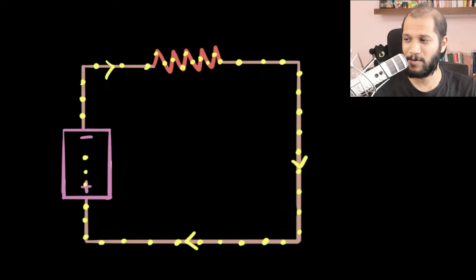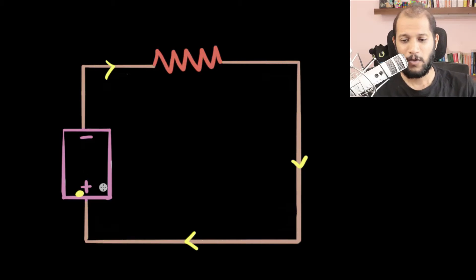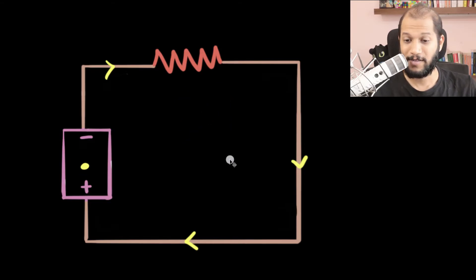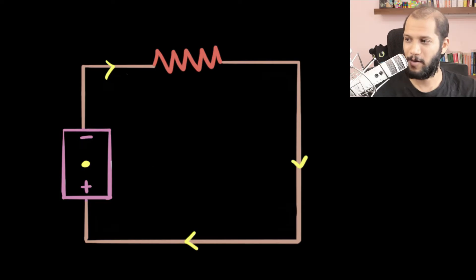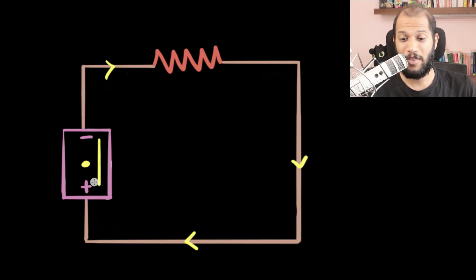To do that, I'm just going to ignore all the other electrons and concentrate on just one. If you look at an electron inside a battery, you can see that it's being pushed by the negative terminal and pulled by the positive terminal, which means the electron experiences an electric push in the downward direction.